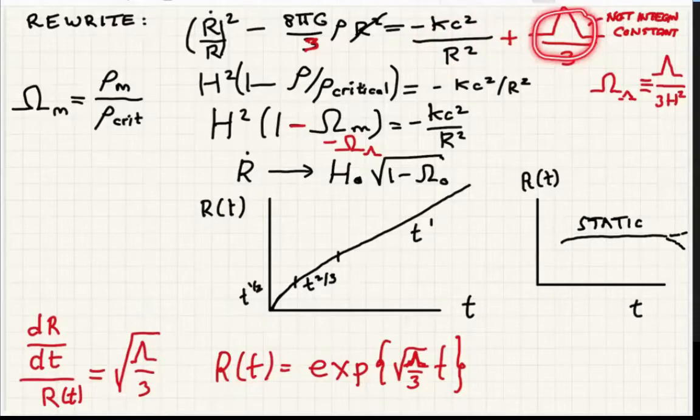I added another term here which has a different flavor. It doesn't have a 1 over r squared on it. It doesn't get less important as the universe expands. These other terms get less important as the universe expands, but this one doesn't. This lambda term only came in when Einstein added an additional term to his field equation for the strength of gravity.